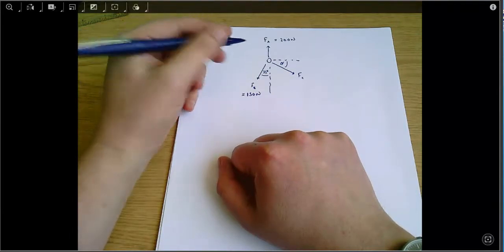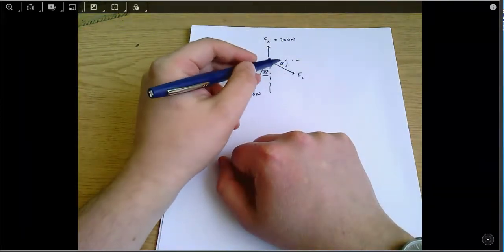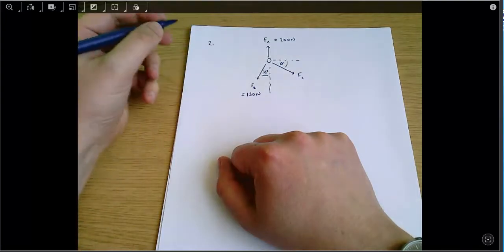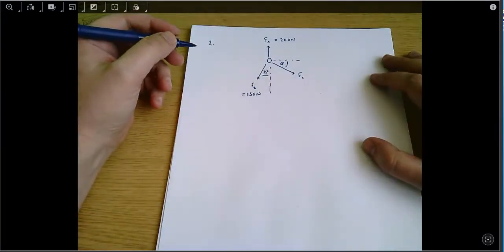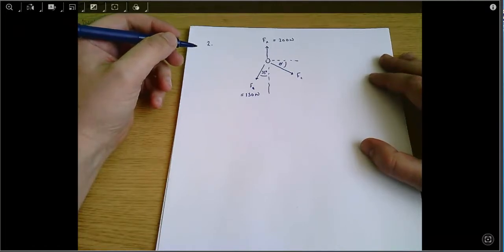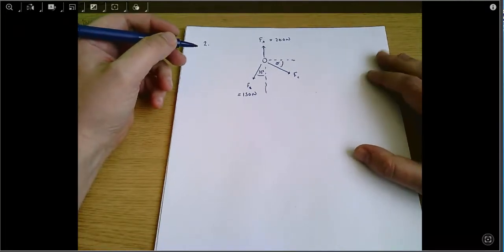The way we're going to solve this problem, we need to find FC and this angle theta here. We're going to solve this problem by breaking things up into horizontal and vertical components and then using the principles of horizontal and vertical equilibrium.